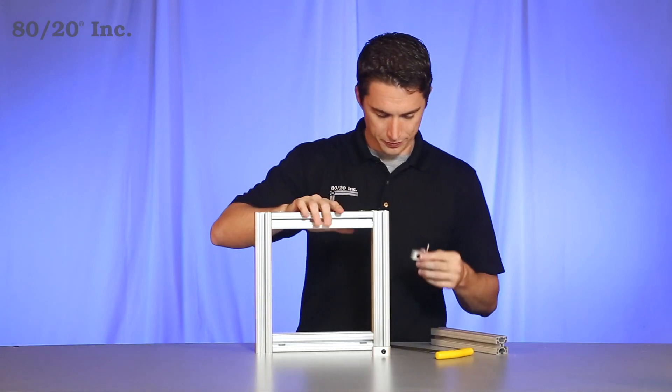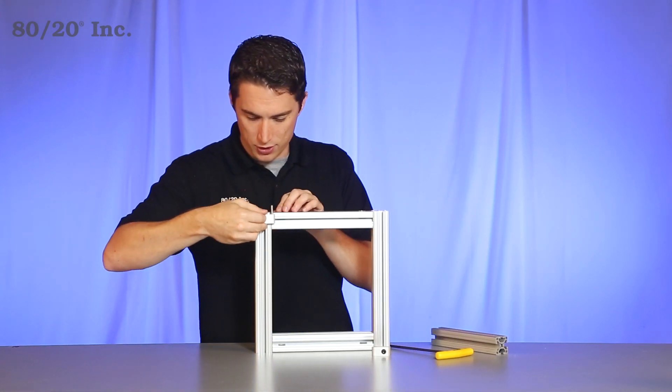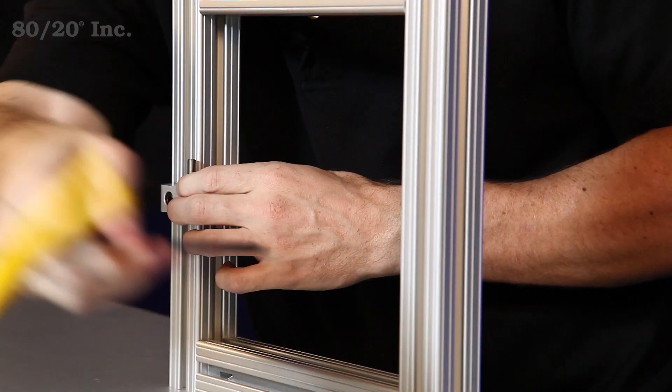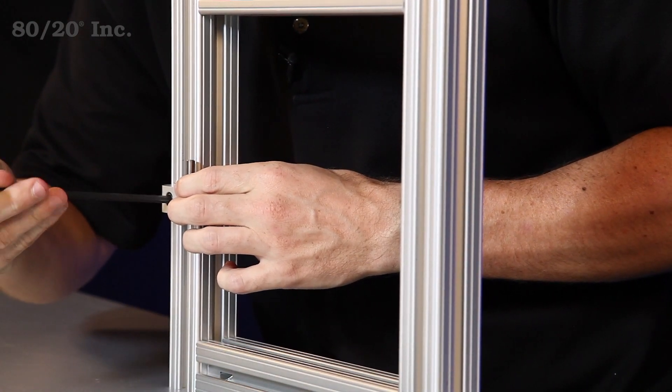Grab our frame, and we'll install one half of the hinge onto the frame. We'll go ahead and tighten that down with our wrench.